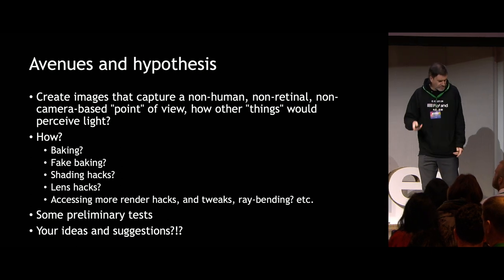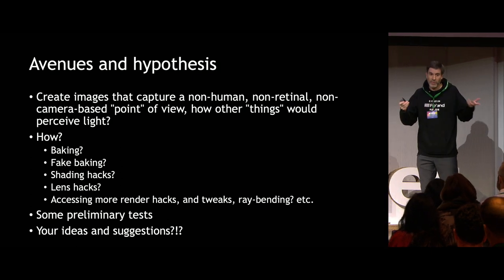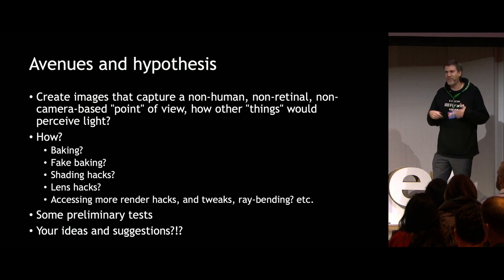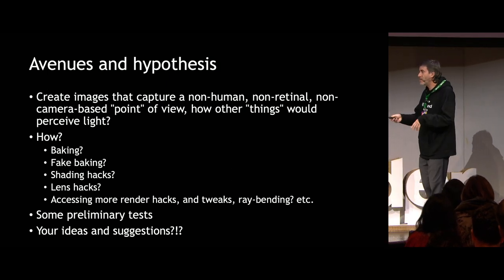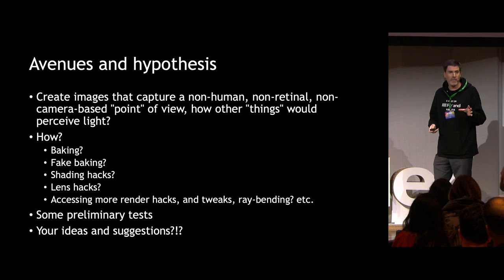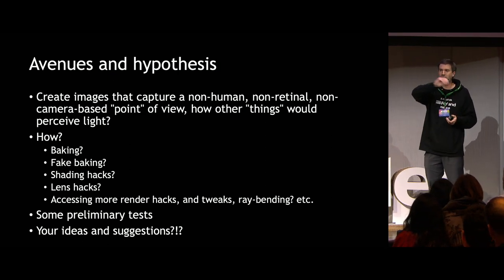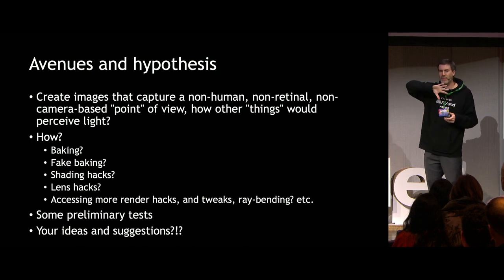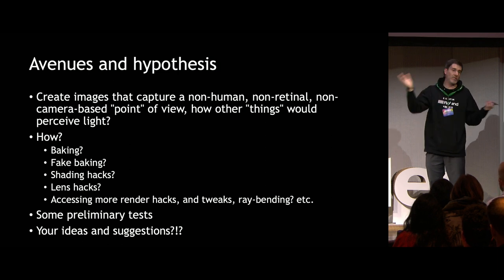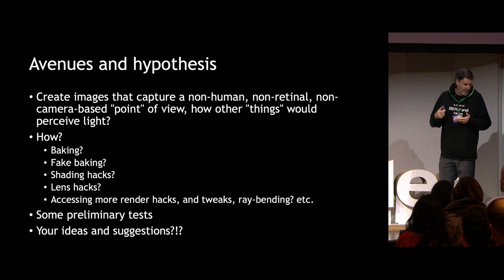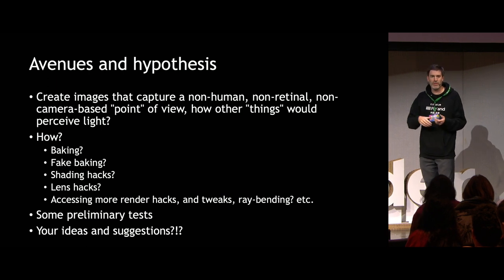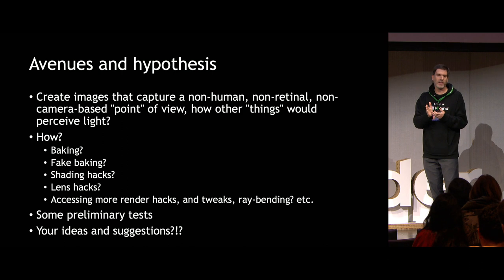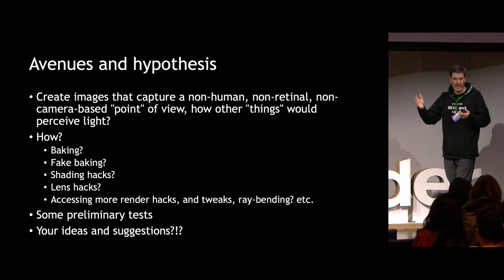A few hypotheses on how to do that: we think about baking because it's one way to compute light, not from a point of view. Maybe fake baking — a camera combined with baking something. Shading hacks. Maybe lens hacking. One of my students made a very fun experiment in Blender — he wanted to know if he could simulate light pipes — optic fiber. He made a huge amount of 10,000 fiber optic fibers to bend a shadow, and it actually worked. So this is kind of playing with optics. And maybe accessing more render hacks and tweaks — I dream of being able to take Blender and say, please make the rays just curve a little bit. Just for fun. These kinds of tweaks.